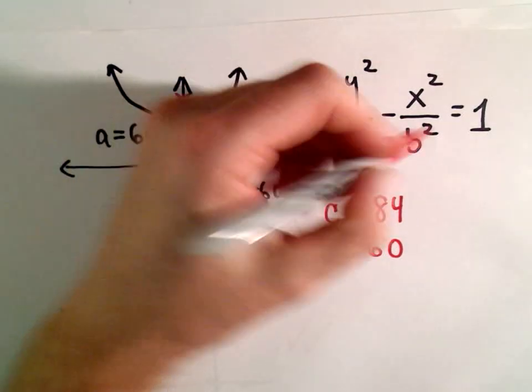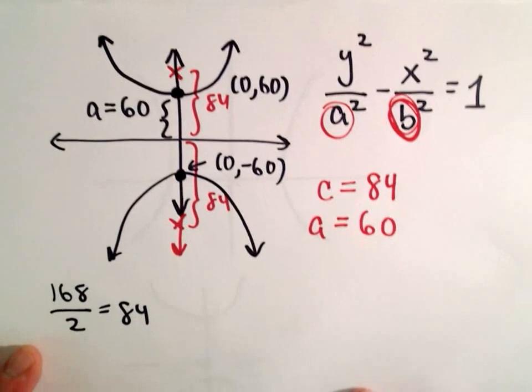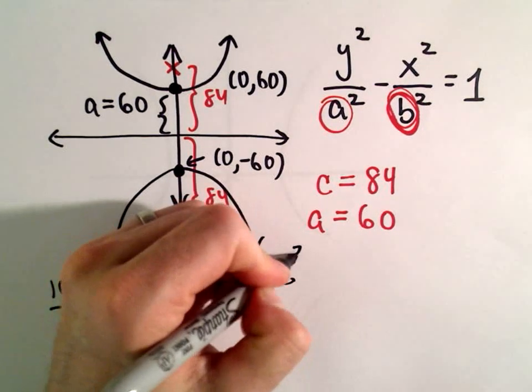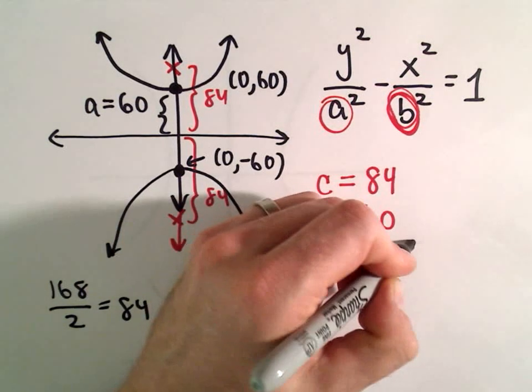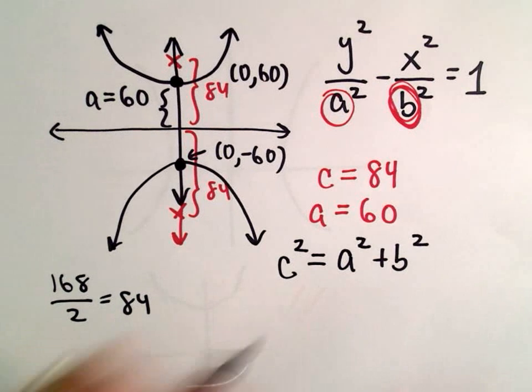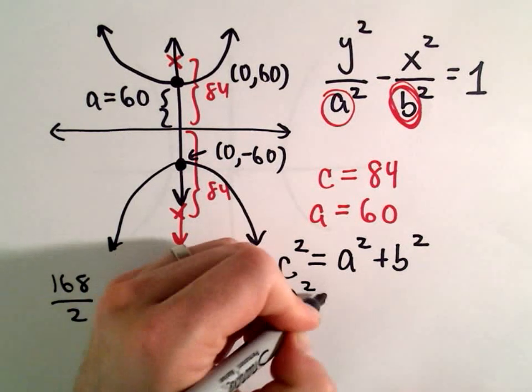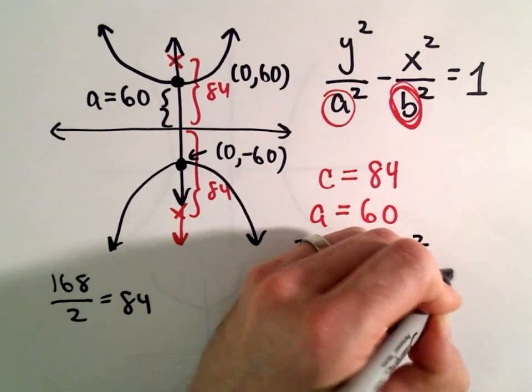Again, well, we know a. The only thing that we're missing is the b value. That's what we need to figure out. Well, C is going to help us do that because we have that equation. It says that C squared equals a squared plus b squared. All right, so now we just start filling in. So it says, well, we've got 84 squared equals 60 squared plus b squared.